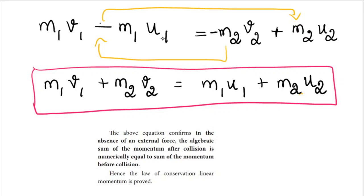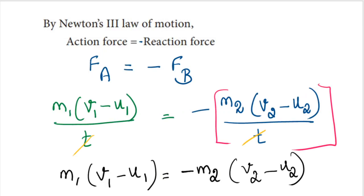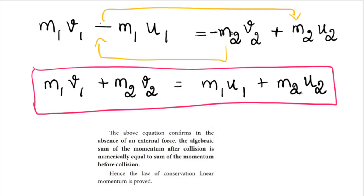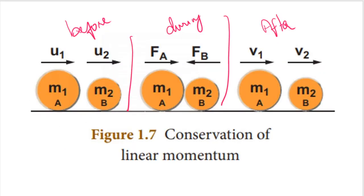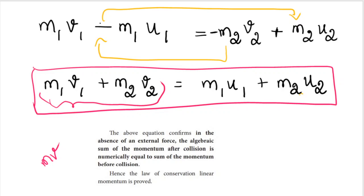We get: M1(V1 minus U1) equals minus M2(V2 minus U2). Expanding: M1·V1 minus M1·U1 equals minus M2·V2 plus M2·U2. Rearranging, we get M1·V1 plus M2·V2 equals M1·U1 plus M2·U2. Here, M1·V1 plus M2·V2 is the total momentum after collision, and M1·U1 plus M2·U2 is the total momentum before collision — and both are equal.